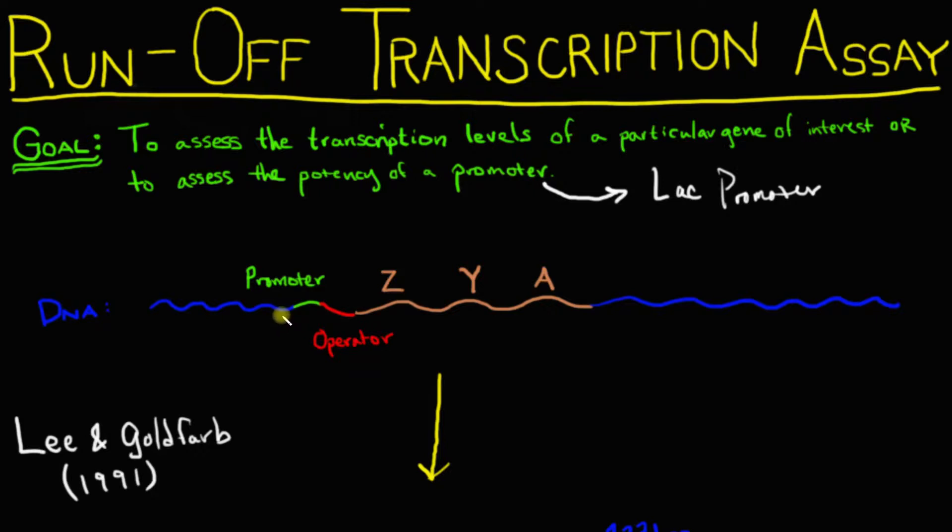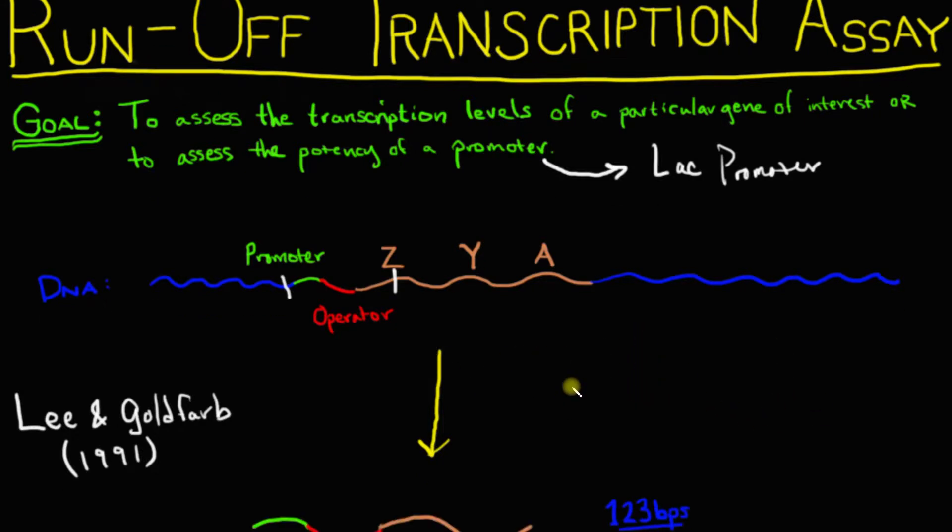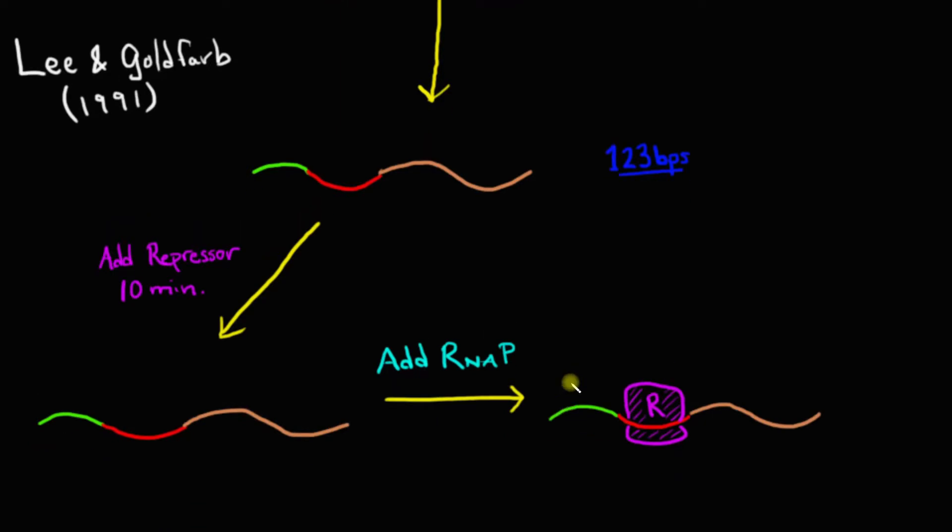So how does this assay work? Well, the first thing you need to do is you need to actually isolate your promoter and your gene of interest. So if we have here the E. coli genome, what we can do is we can make two cuts. One just a little bit upstream of the promoter, here, and one in the middle of the Z gene. What this gives us is a small, 123 base pair long fragment of DNA that consists of our control elements, here, as well as a fragment of the lac Z gene, here.